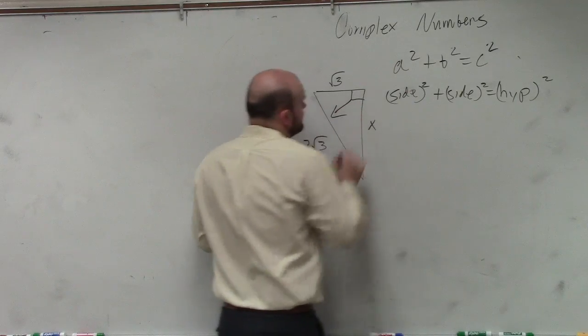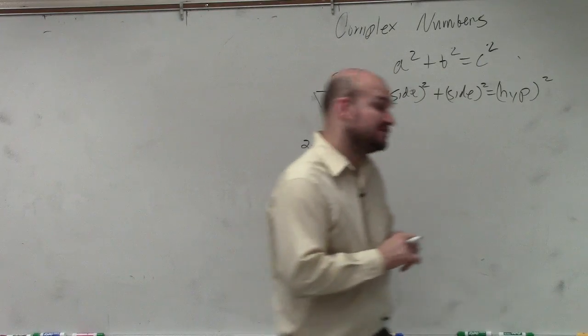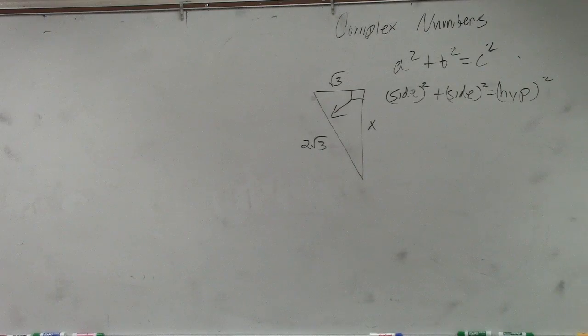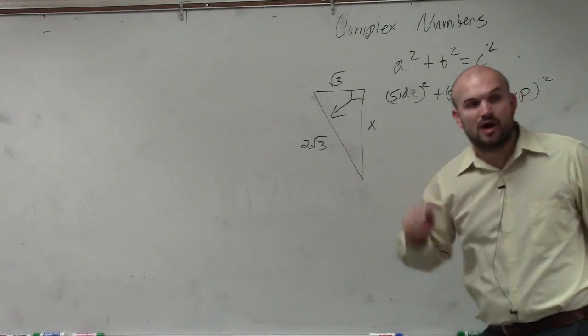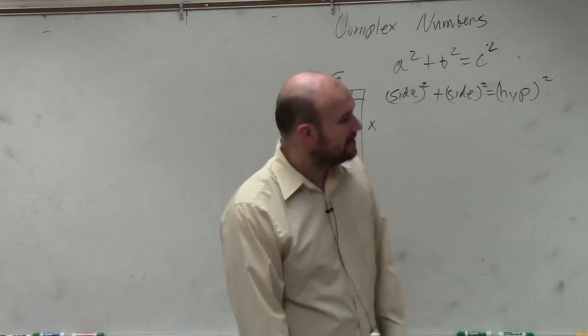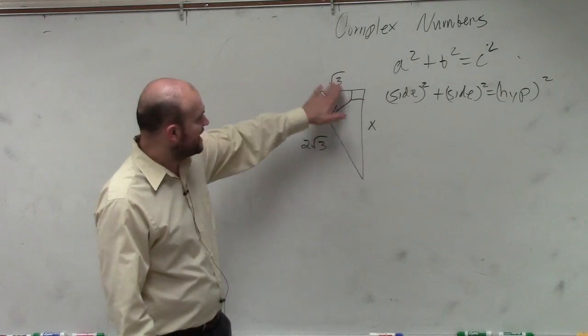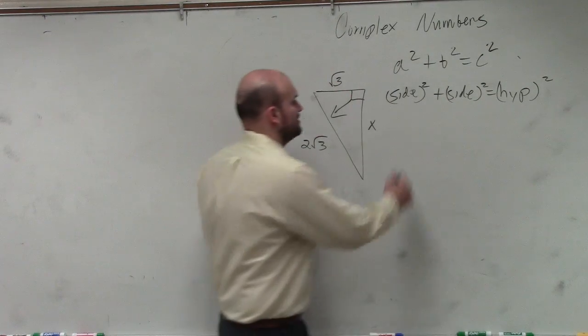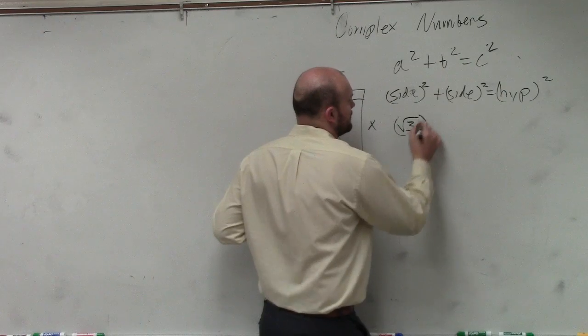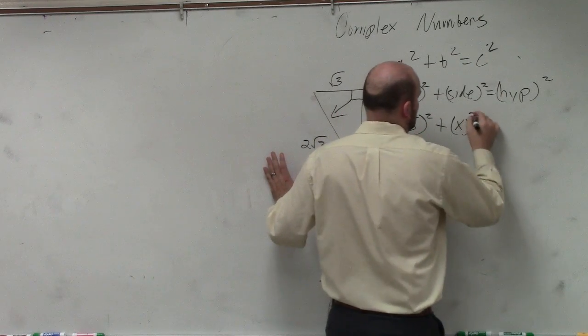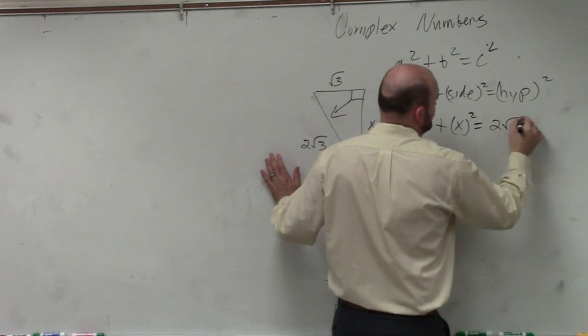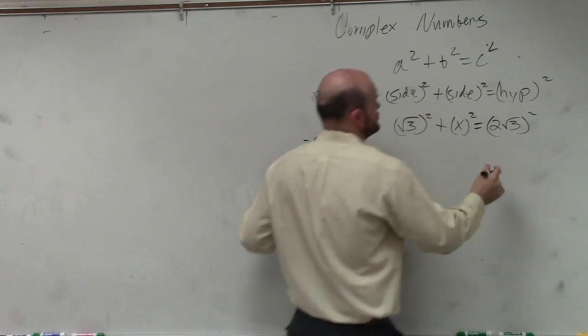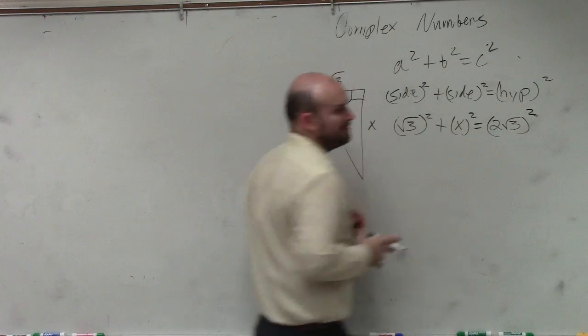So in your geometry class, hopefully you remember that the hypotenuse is always not only the longest side, but it's always directly across from your 90-degree angle. So therefore, I can see that my two sides are going to be square root of 3 and x. So I have square root of 3 squared plus x squared equals 2 square root of 3 squared. Does everybody see what I did there?